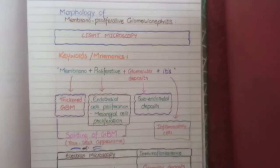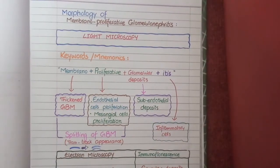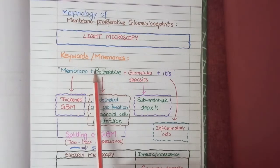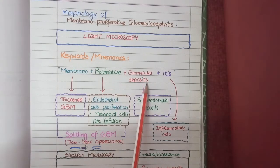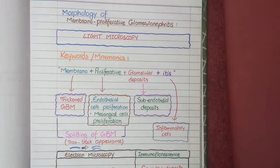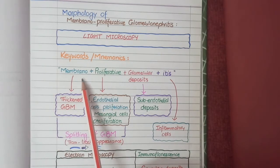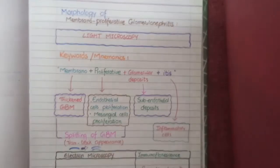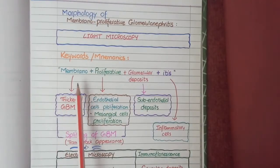Now let's study the morphology of membranoproliferative glomerulonephritis, examining light microscopy, electron microscopy, and immunofluorescence. For light microscopy the keywords to remember are: membrano, proliferative, glomerular deposits, and itis — mirroring the name of the disease itself. The first keyword, membrano, corresponds to thickened glomerular basement membrane seen on light microscopy.